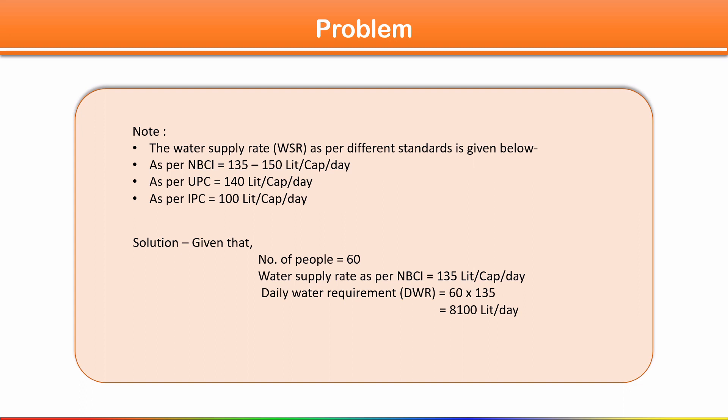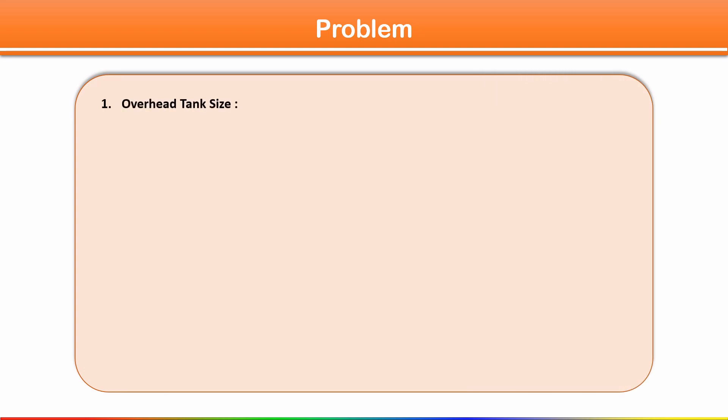The daily water requirement is 8100 liters per day, which is 8.1 cubic meters per day. To find the volume of the overhead tank: since OHT is designed for half day capacity, volume = 8.1 × 0.5 = 4.05 cubic meters.